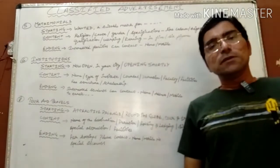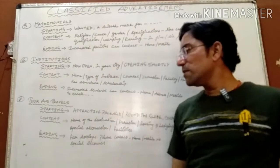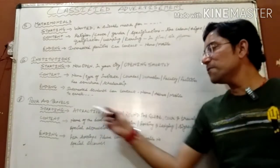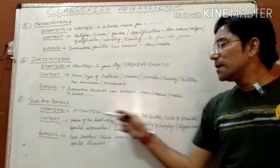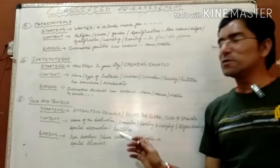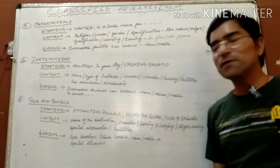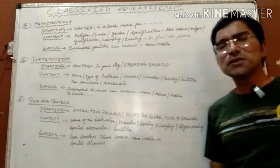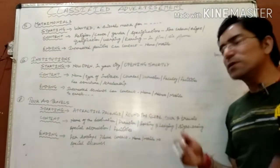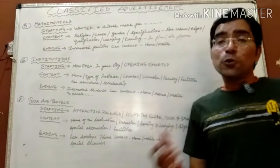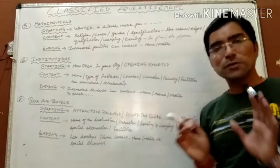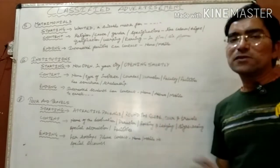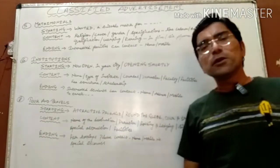The last category is tour and travel advertisements. To start, we have two options: the first is 'Attractive package' as a heading — written in capital/block letters — and the second option is the name of the tour and travel company, for example 'Round the Globe.' So you could write: 'Round the Globe Tour and Travels offers an attractive package to Goa for three days, two nights.'